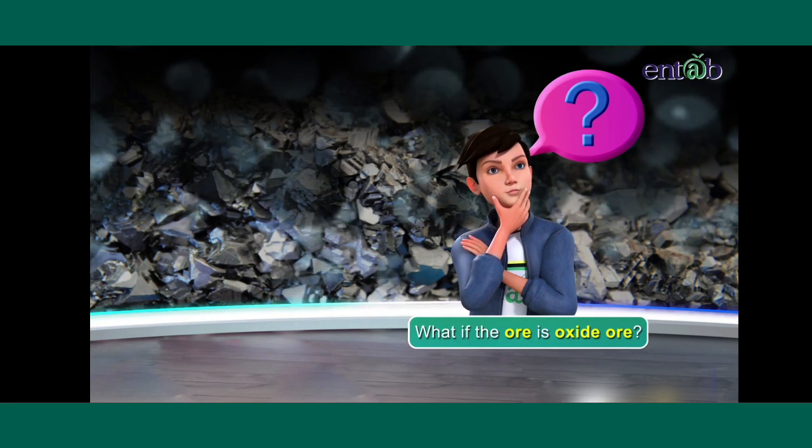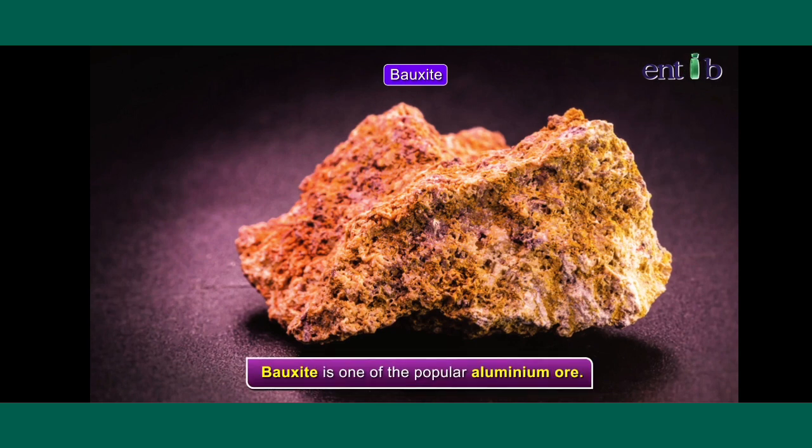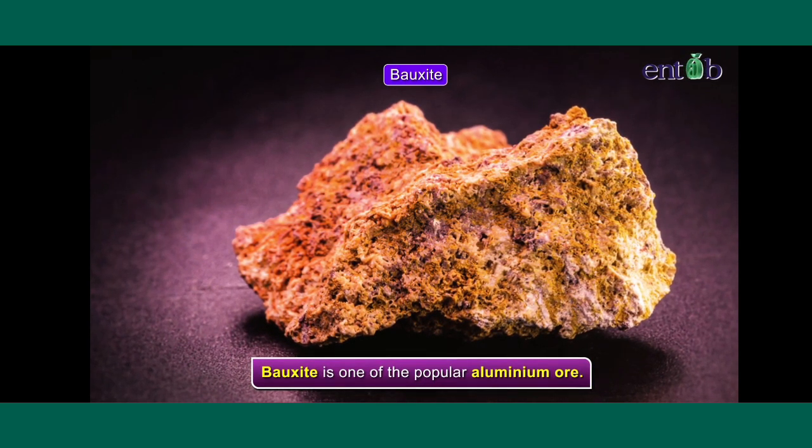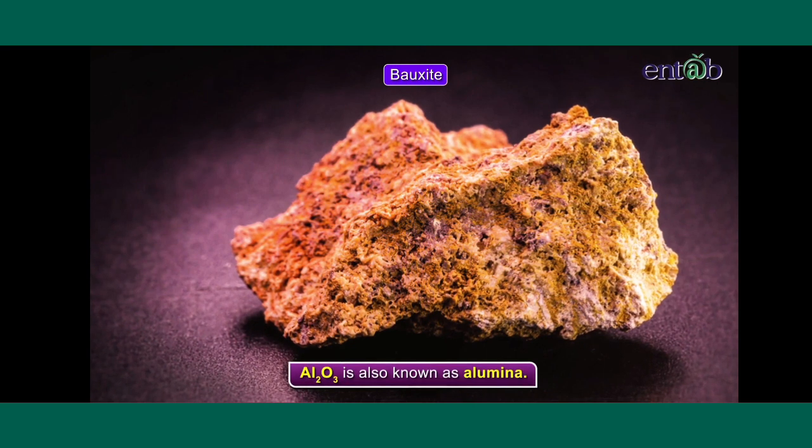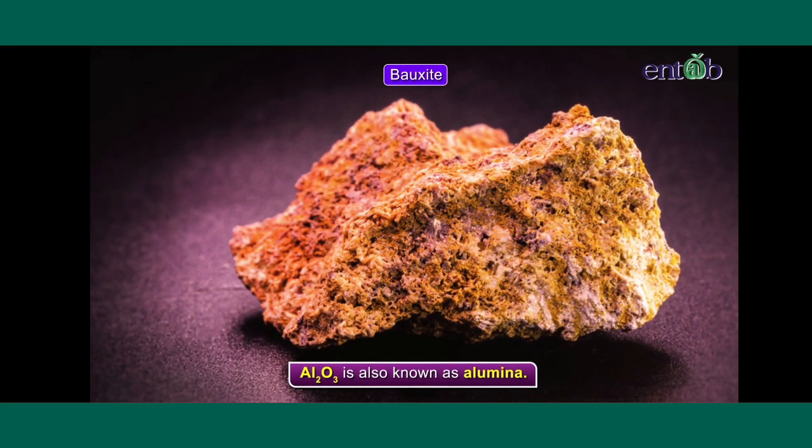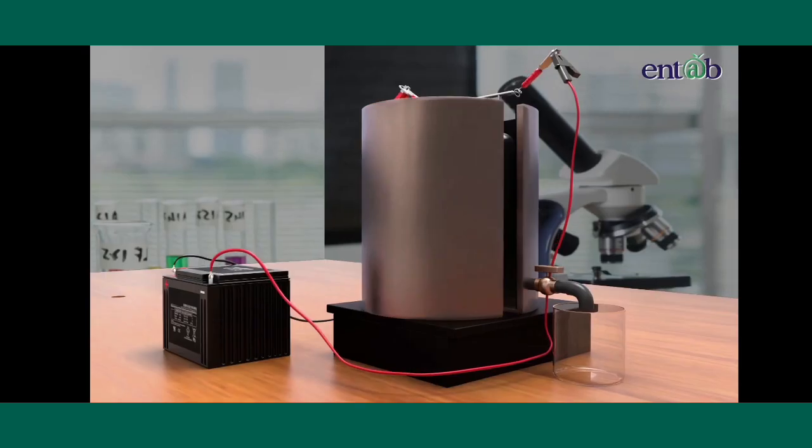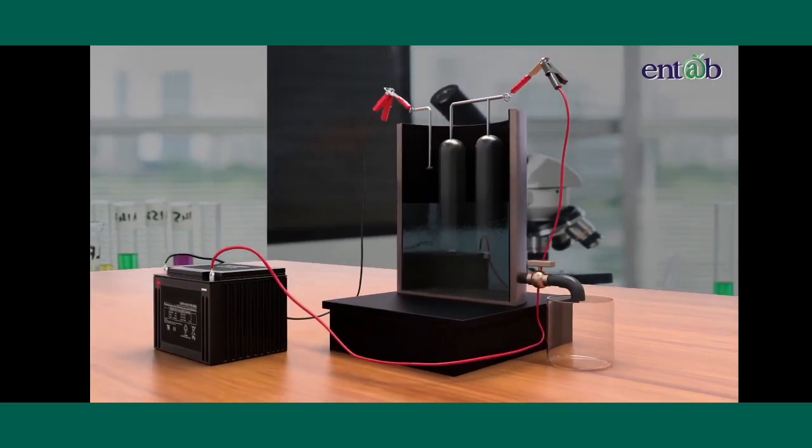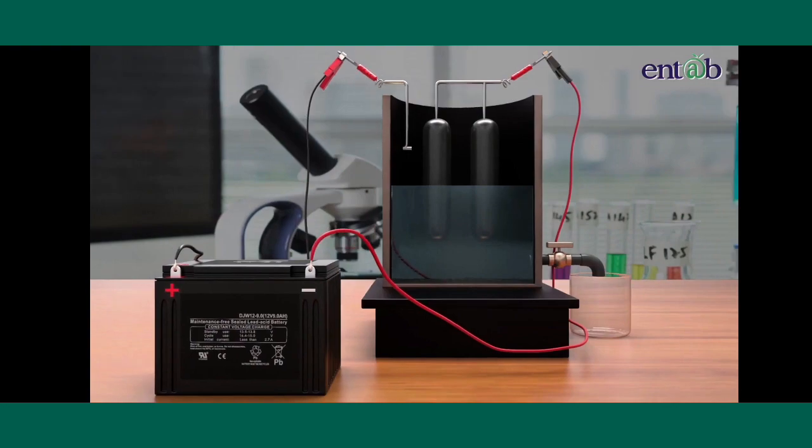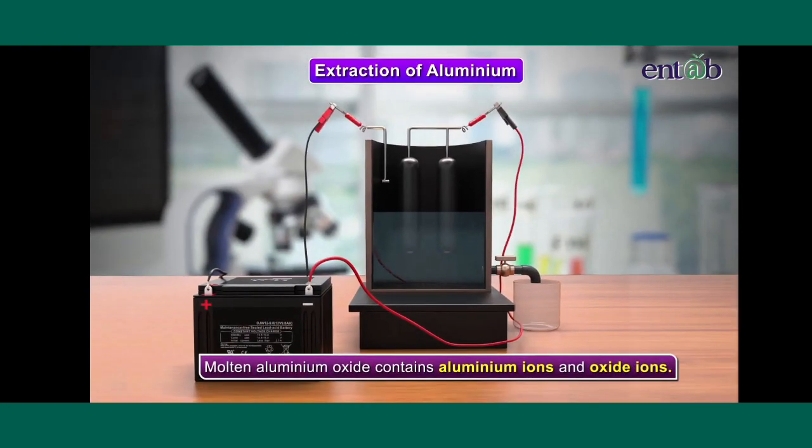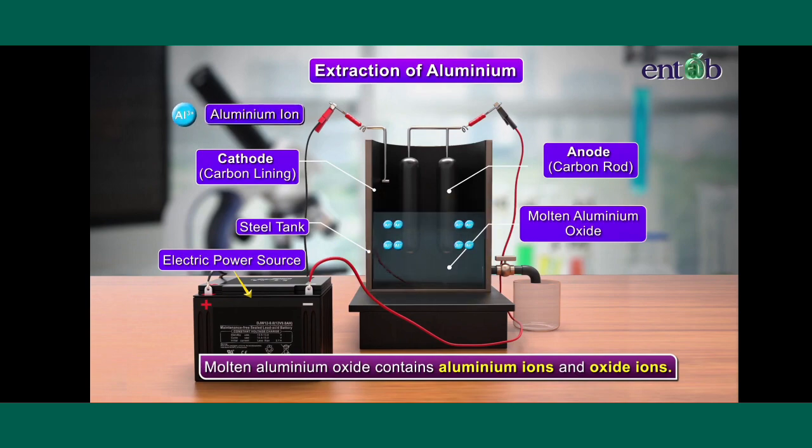Let us understand by taking the example of bauxite, which is one of the popular aluminium ores. It is Al2O3, which is also known as alumina. Al2O3 is a stable compound. Now, we shall try to understand the electrolysis of molten aluminium oxide. Molten aluminium oxide contains aluminium ions and oxide ions.